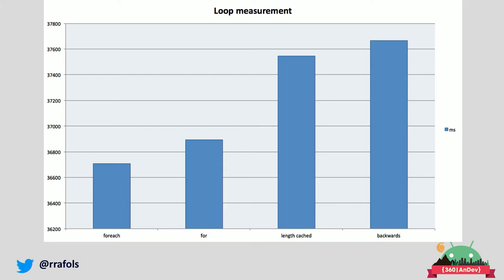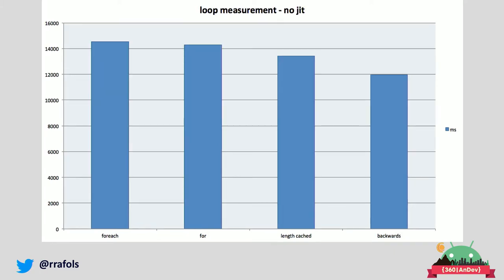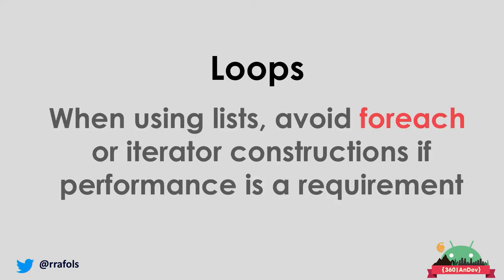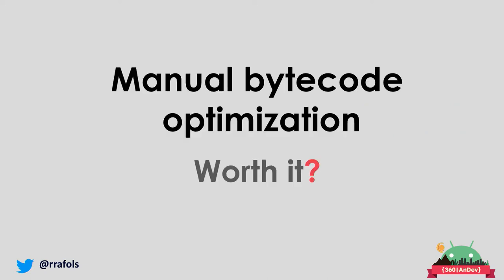Going backwards had fewer instructions but we have to be careful because we're probably killing our cache, which may be why it takes longer. On a Java device without Android, results are actually reversed — the backwards loop is the fastest because there's a huge penalty on interpreting Java bytecode, so fewer instructions matters more. Use arrays instead of lists as much as you can, and when using lists try to avoid the for-each operator.